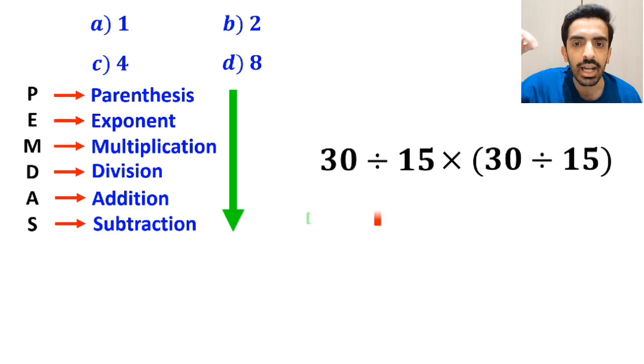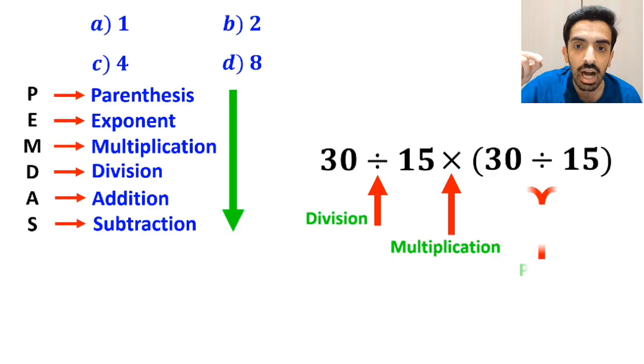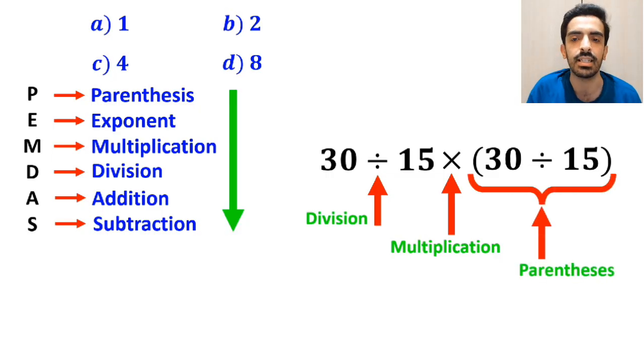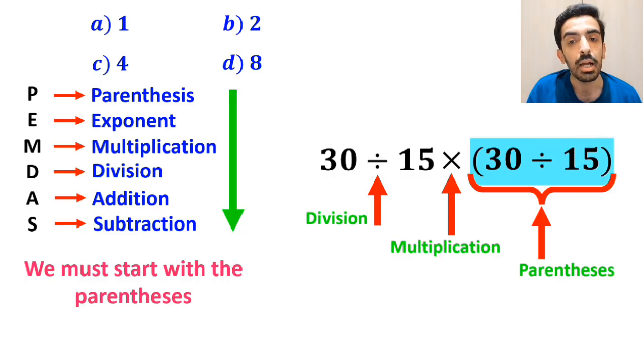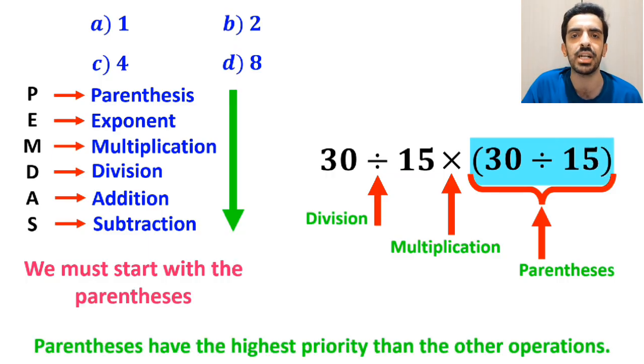In this expression, first we have a division sign, then a multiplication sign, and finally parenthesis. According to the PEMDAS rule, we must start with the parenthesis first, because parenthesis have the highest priority compared to the other operations.